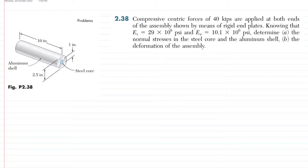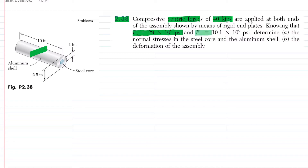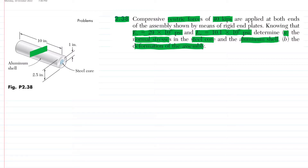Welcome back - Problem 2.38. In this problem, a compressive centric force of 40 kips is applied at both ends of the assembly shown by means of rigid end plates. Knowing that for steel the modulus of elasticity Es is given, and for aluminum Ea is 10.1×10⁶ psi, determine in Part A the normal stress in the steel core and aluminum shell, and in Part B the deformation of the assembly.